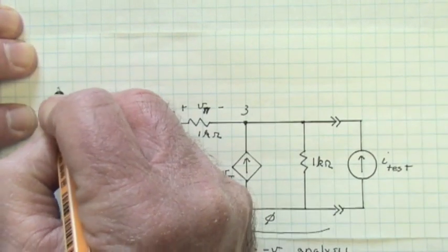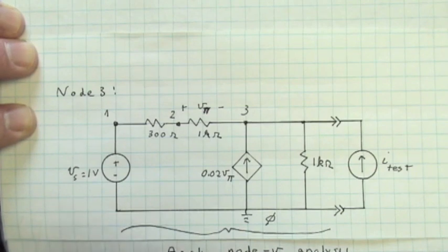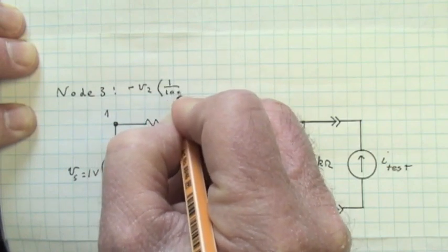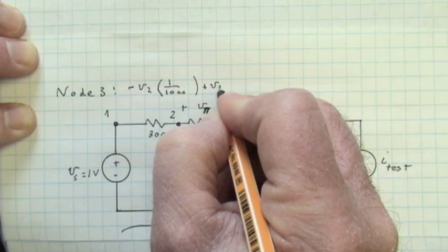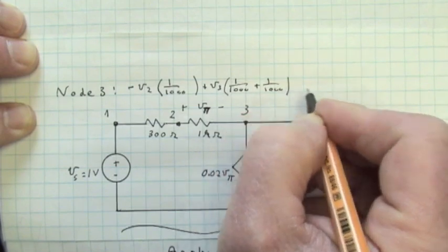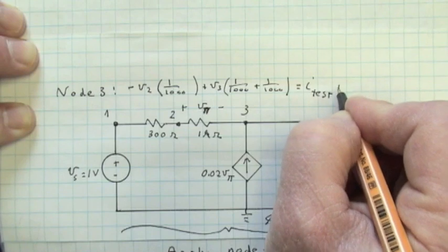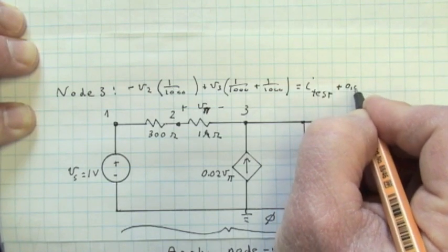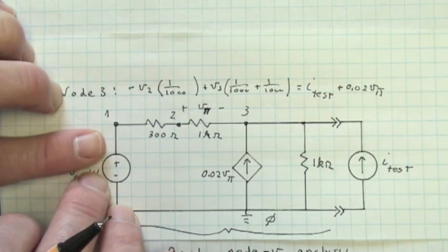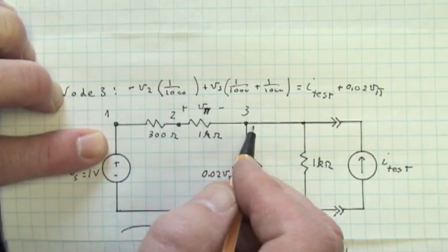For node voltage equation for node 3, I will write down the node voltage equation by inspection as minus V2 times 1 over 1,000 plus V3, there are two resistors here, 1 over 1,000 plus 1 over 1,000 is equal to I test plus 0.02 times V sub pi. V sub pi is not a node voltage, but V sub pi can be expressed in terms of node voltages as V2 minus V3.